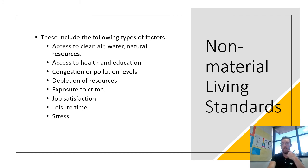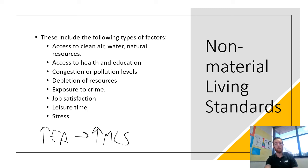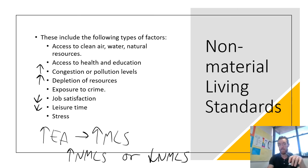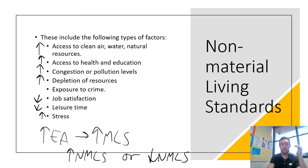Non-material living standards also include congestion or pollution levels, depletion of resources, exposure to crime, job satisfaction, leisure time, and stress. An increase in economic activity usually leads to an increase in material living standards, but it could either improve or worsen non-material living standards. For example, increasing economic activity could increase congestion, pollution, and resource depletion, and people could have less leisure time or job satisfaction. On the other hand, if people are earning more income they might be less stressed and have more access to health and education. So it can affect non-material living standards either positively or negatively depending on the situation.